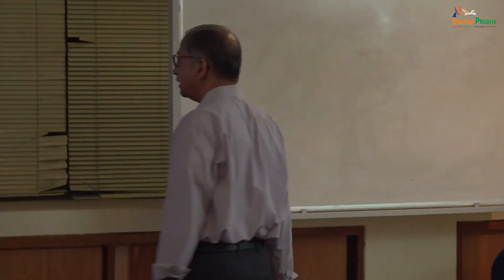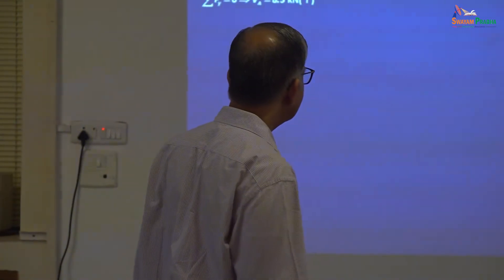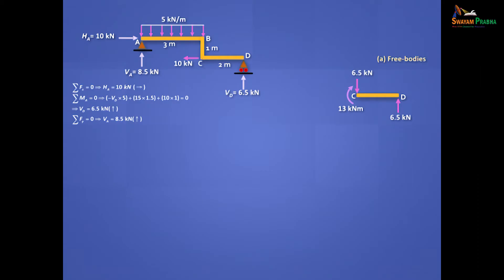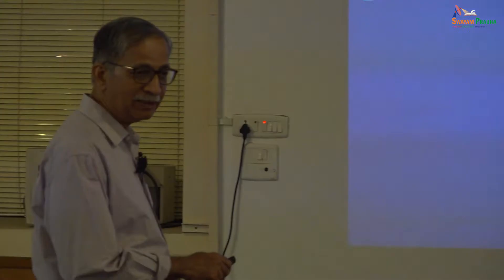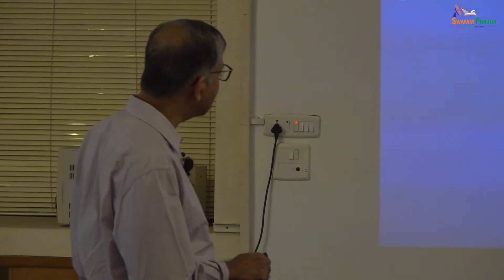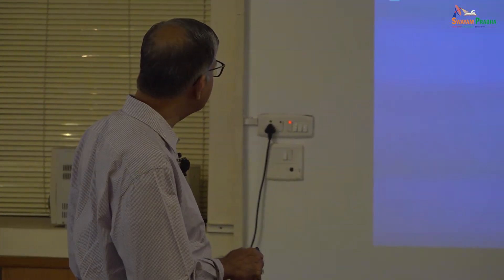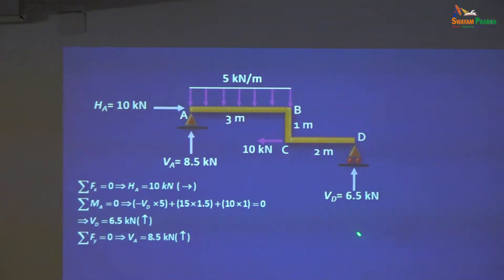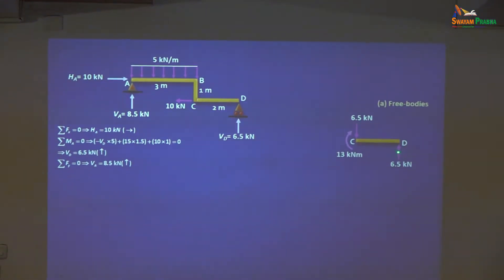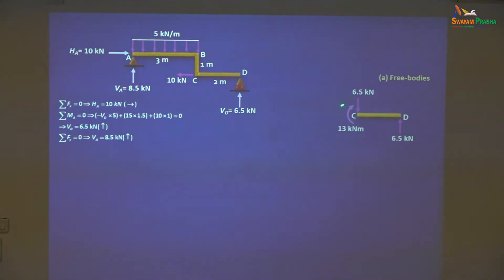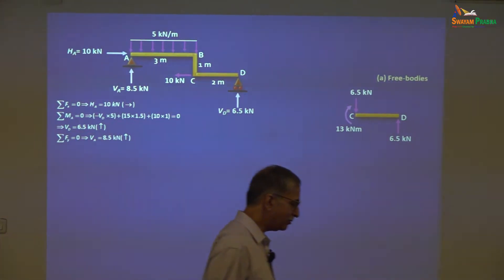Now draw the free bodies. Where would you like to start? You can start anywhere — there is no preference because there is no free end here. We'll start with CD. Now please note: you need to be intelligent here. This 10 kilo Newton — don't put it on to CD, because it's going to be unbalanced since this roller can't take it. The entire 10 kilo Newton will go to this side. Draw this with just 6.5 here and then at C you have to put the internal forces which satisfy equilibrium.